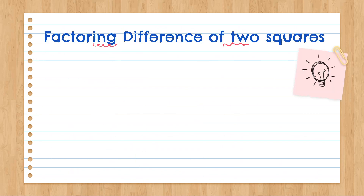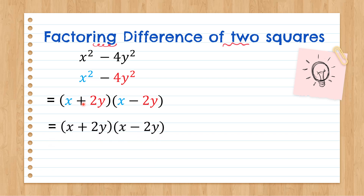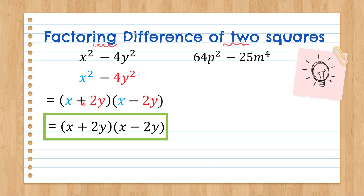Now let's have factoring difference of two squares. We have x squared minus 4y squared as an example. Take the square root of the first term and the square root of the second term. So x times x, and the other is 2y times 2y. This gives us the factors of the difference of two squares, x squared minus 4y squared, and they will have unlike signs — one positive, one negative.